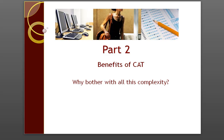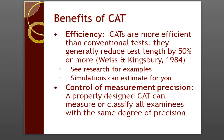Now on to part two — some benefits of CAT. Why would you bother with all the complexity that goes into a CAT? The most important benefit is efficiency. CATs are more efficient than conventional fixed-form tests. On average, they have been found to reduce test length by 50% or more. You can look at research in your field for examples, or use simulation studies such as with the program CATSIM to estimate based upon your existing item bank.